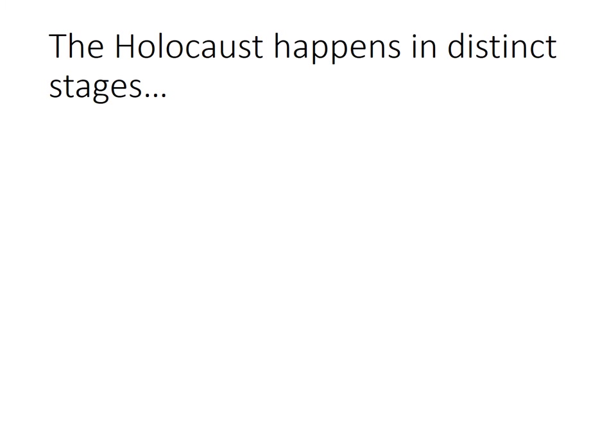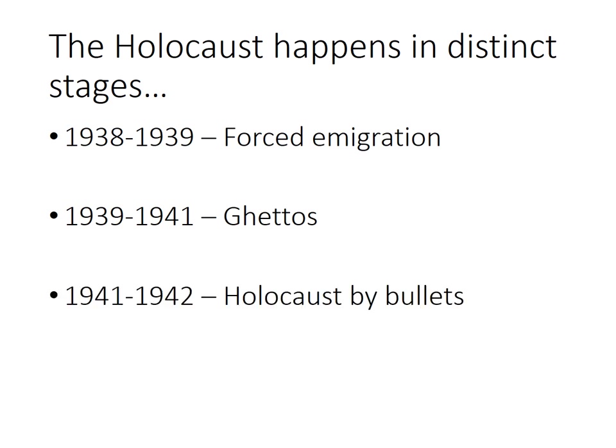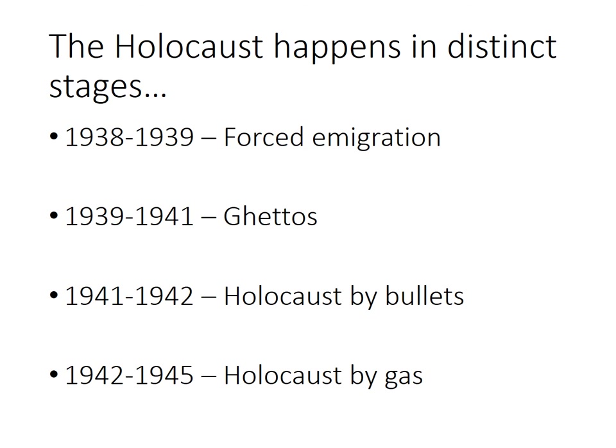To recap where we've got to: the Holocaust happens in distinct stages. It starts with forcing Jews to leave the countries that were occupied — forced emigration in places like Austria. The nature of persecution changes when the Nazis invade other countries like Poland, and the second stage of the Holocaust is about ghettoisation — concentrating the Jews into smaller regions. That changes again when the Nazis invade the Soviet Union, and this is really where mass murder begins, giving us the Holocaust by bullets. In the next video you can watch, that's when the Holocaust by gas begins in the death camps.